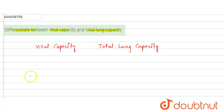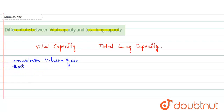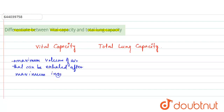Vital capacity is the maximum volume of air that can be exhaled after maximum inspiration.